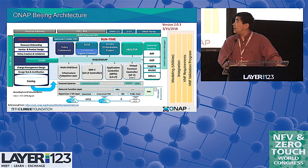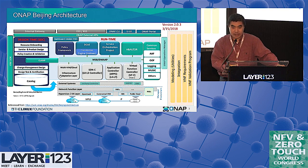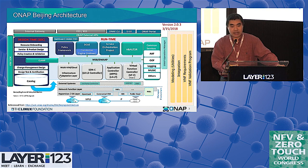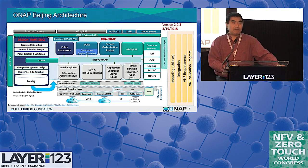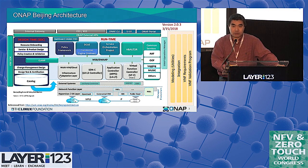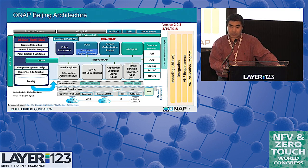Here is the ONAP Beijing Target Architecture. This architecture was finalized and approved by ONAP TSC on March 22nd. The ONAP architecture design principle is divided into two major areas: one is called the design time component, and the other is the runtime environment. The design time environment, on the left-hand side, is for users to design the service, onboard different VNFs, onboard different artifacts, and create different policies in order for the runtime environment to instantiate the service.